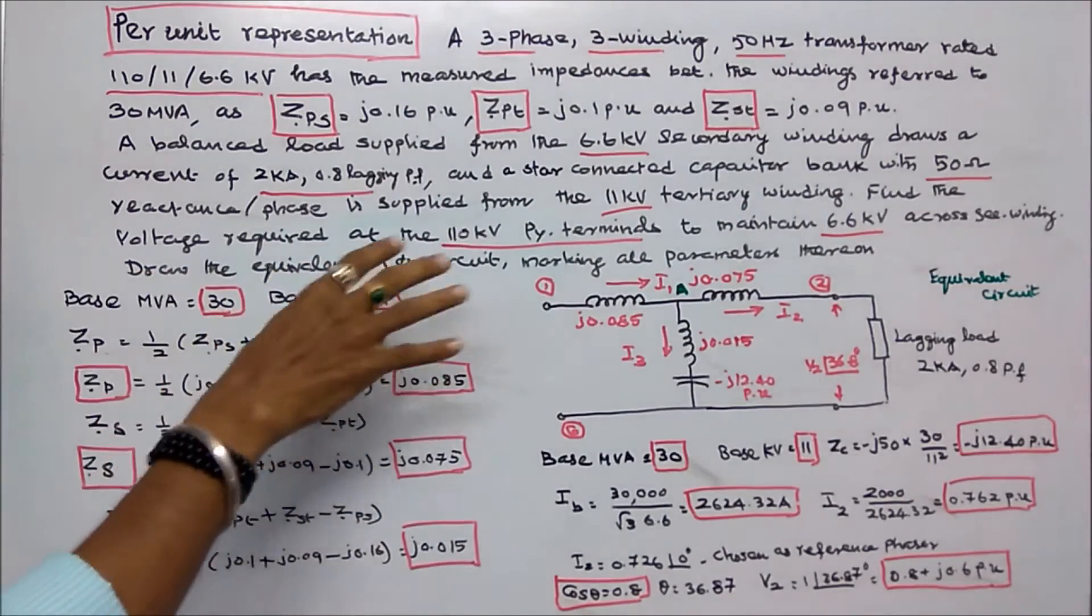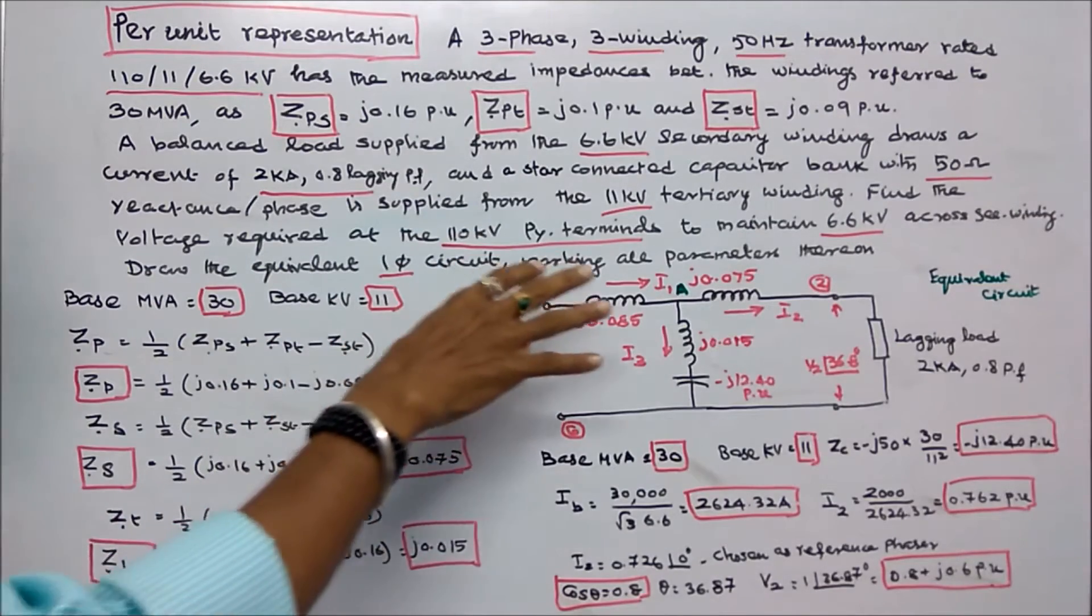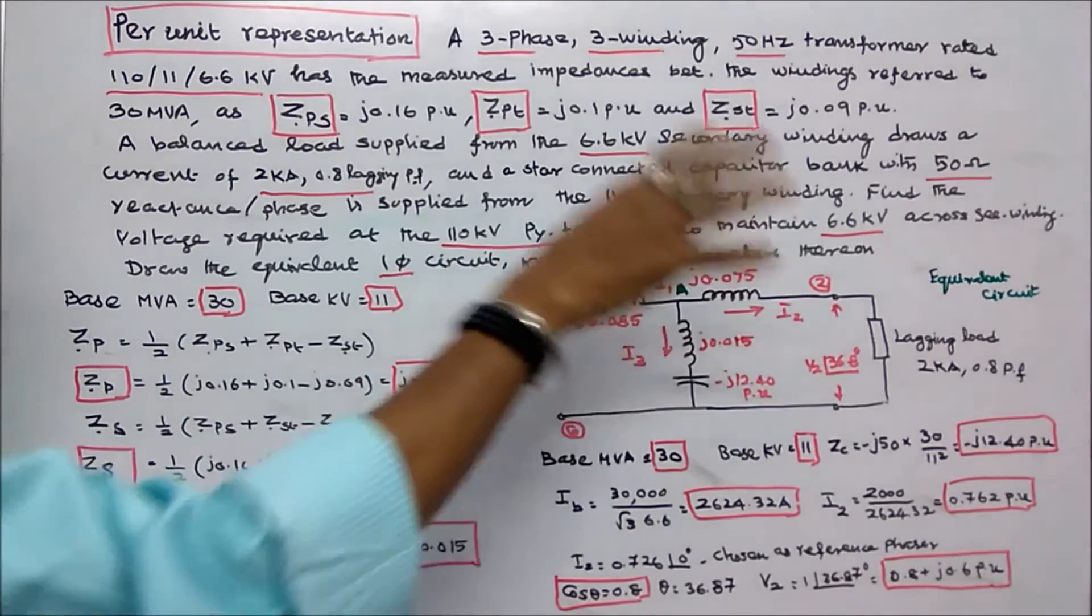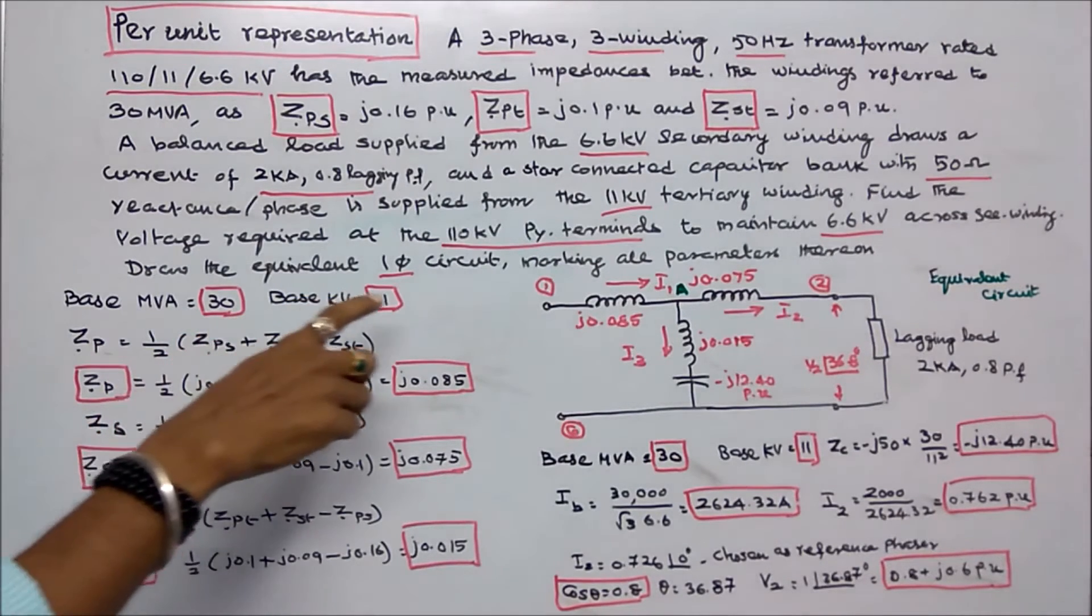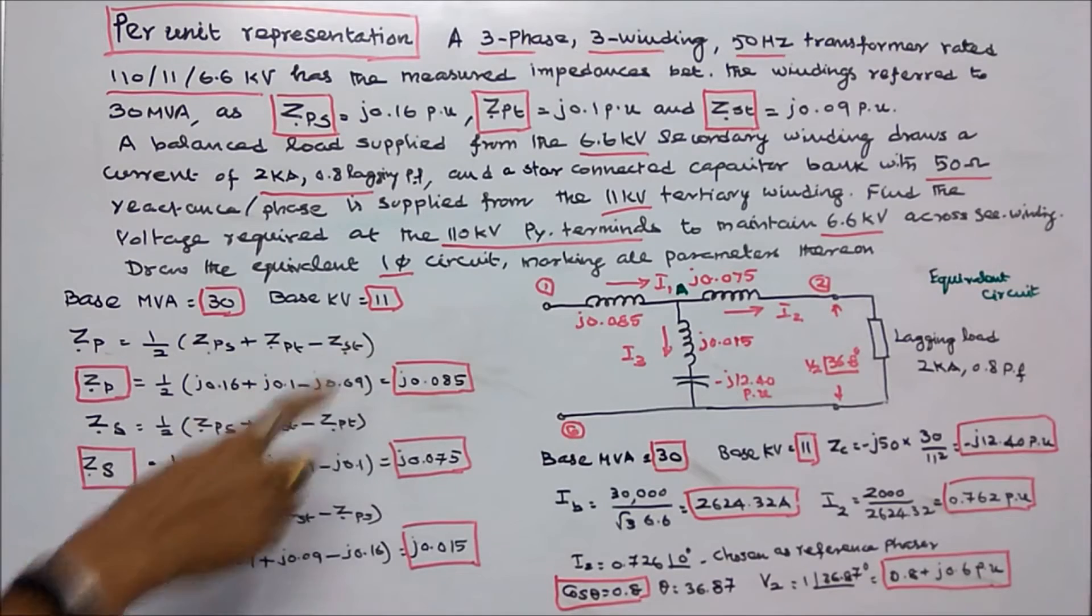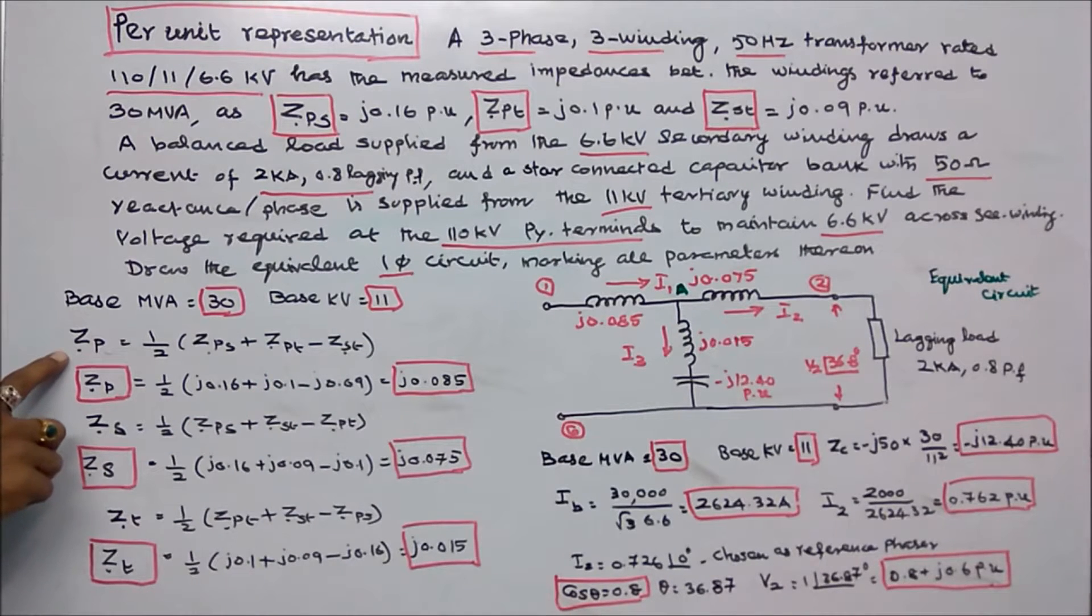Draw the equivalent single phase circuit marking all parameters thereof. That's the question. We choose base MVA is equal to 30, base KV is equal to 11. We can find Z per unit primary, Z per unit secondary, Z per unit tertiary winding.